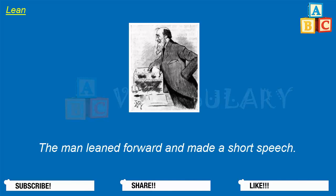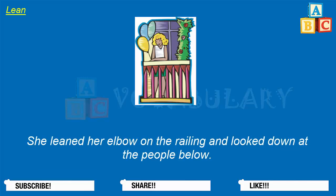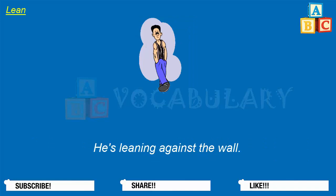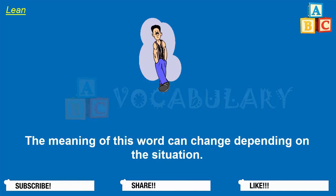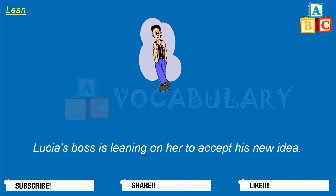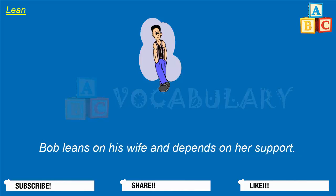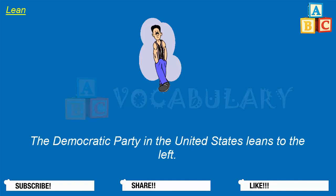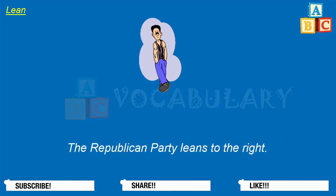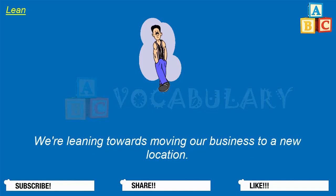The man leaned forward and made a short speech. She leaned her elbow on the railing and looked down at the people below. He's leaning against the wall. The meaning of this word can change depending on the situation. Lucia's boss is leaning on her to accept his new idea. Bob leans on his wife and depends on her support. The Democratic Party in the United States leans to the left. The Republican Party leans to the right. We're leaning towards moving our business to a new location.